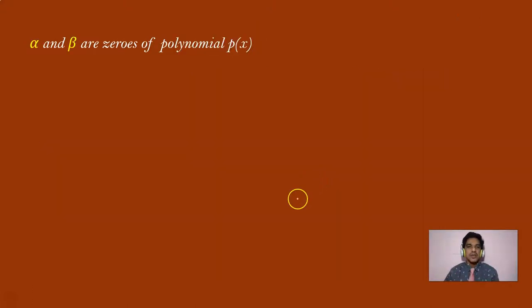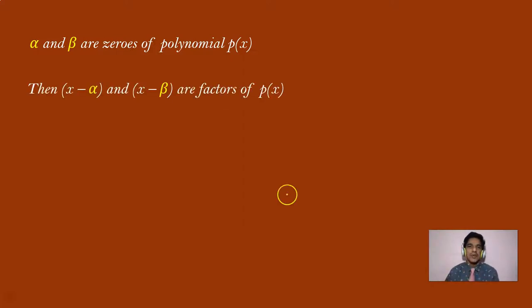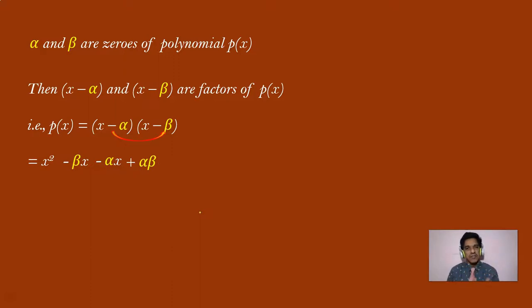Now let us generalize this logic. Suppose alpha and beta are zeros of the polynomial. If a is a zero, then x minus a is a factor. So if alpha is a zero, then x minus alpha is a factor. Similarly, if beta is a zero, then x minus beta is a factor. So p(x) equals (x minus alpha)(x minus beta). Multiplying: x times x gives x squared; x times minus beta gives minus beta x; minus alpha times x gives minus alpha x; minus alpha times minus beta gives plus alpha beta. Collecting like terms: minus beta x minus alpha x equals minus(alpha plus beta)x. So p(x) equals x squared minus (alpha plus beta)x plus alpha beta.